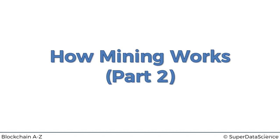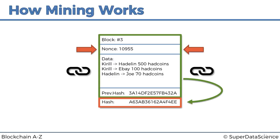Alright, part 2 - how mining works. Let's have a look. We left off last time with this block, and we now know that we can control or vary the hash of the block by varying the nonce - the extra field that we identified.